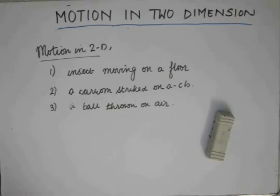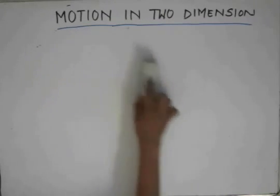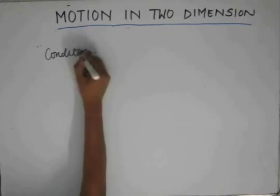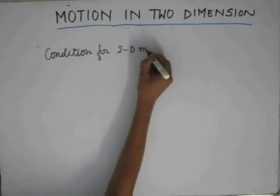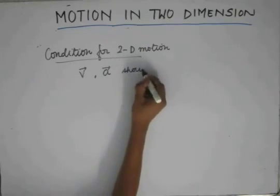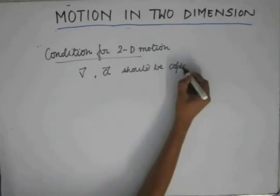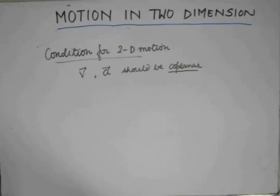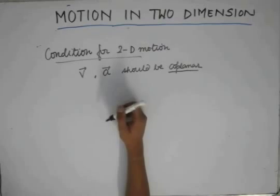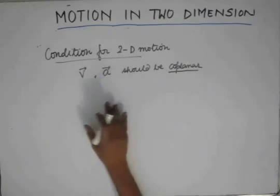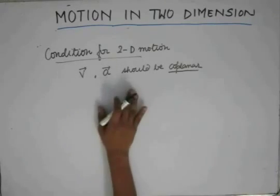For two-dimensional motion, the velocity vector and the acceleration vector should be coplanar. What I mean by coplanar is that the velocity and acceleration vectors should both lie on the same plane in which the motion is occurring. The reason for this is if the acceleration vector has a component in some other plane, it will tend to provide a velocity in that direction, and ultimately the particle will jump out of that plane and move into some other plane, making the motion three-dimensional. So that requires that velocity and acceleration should be coplanar.